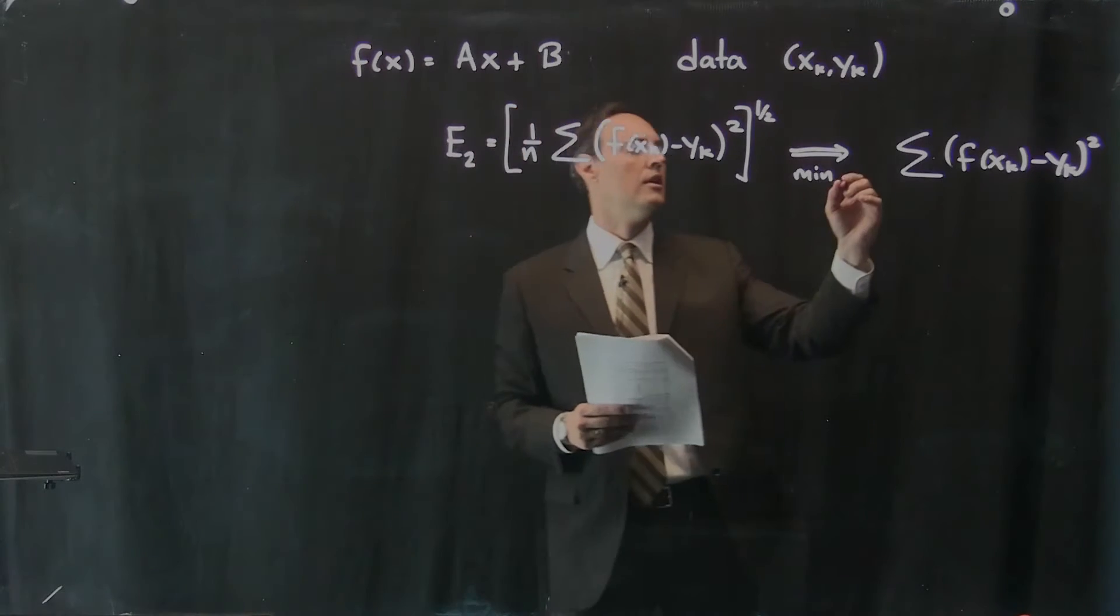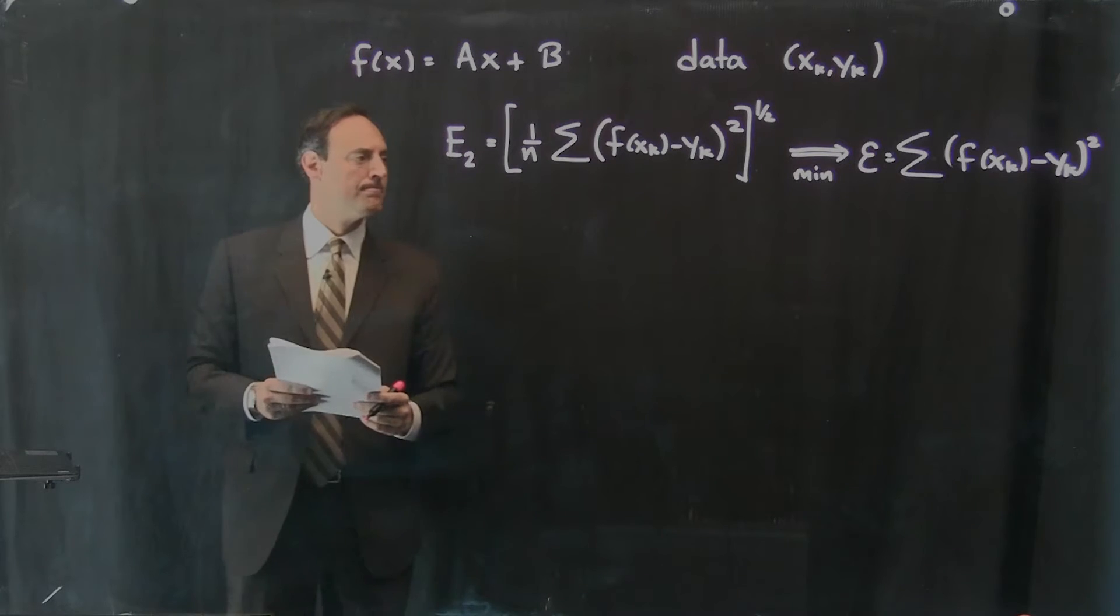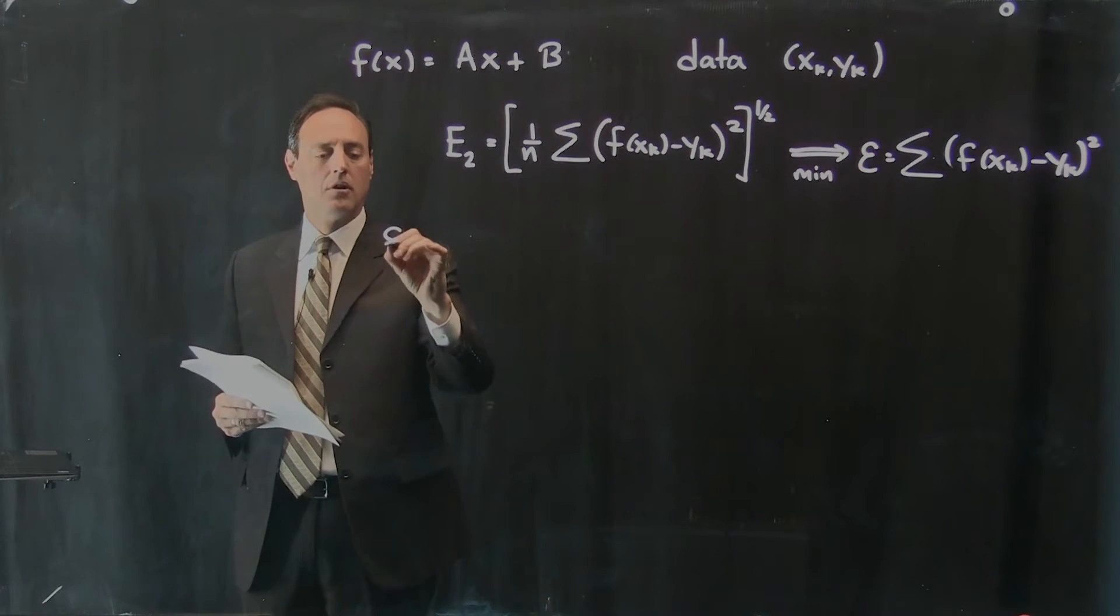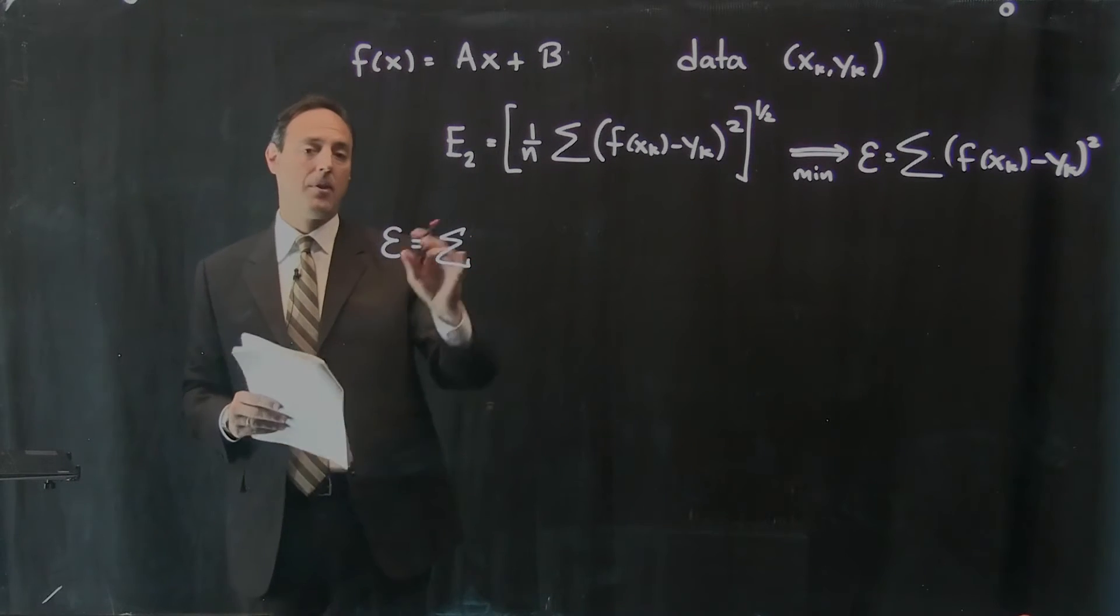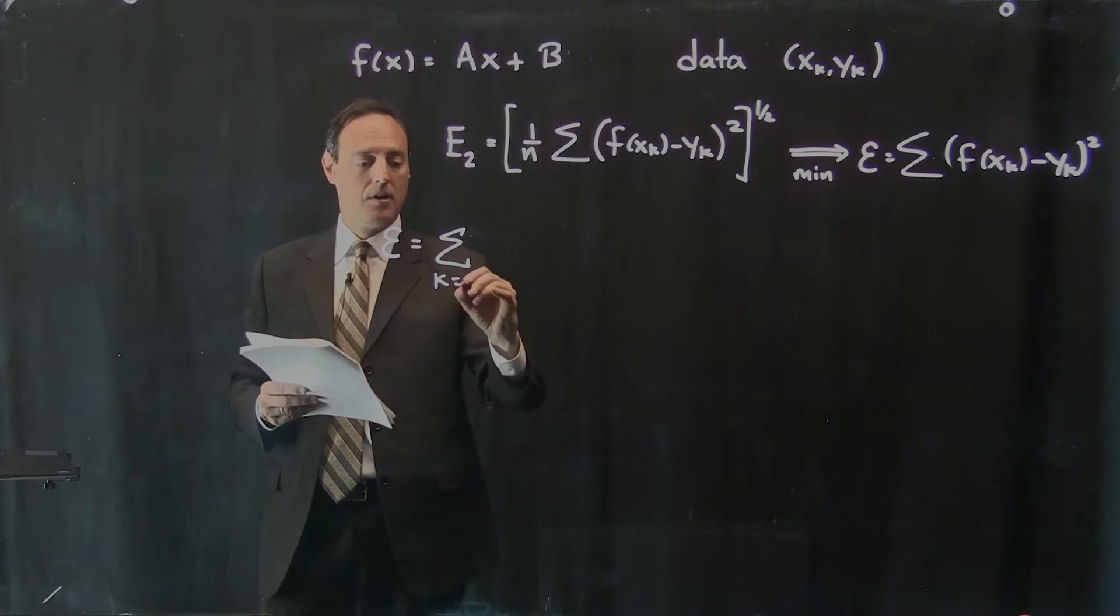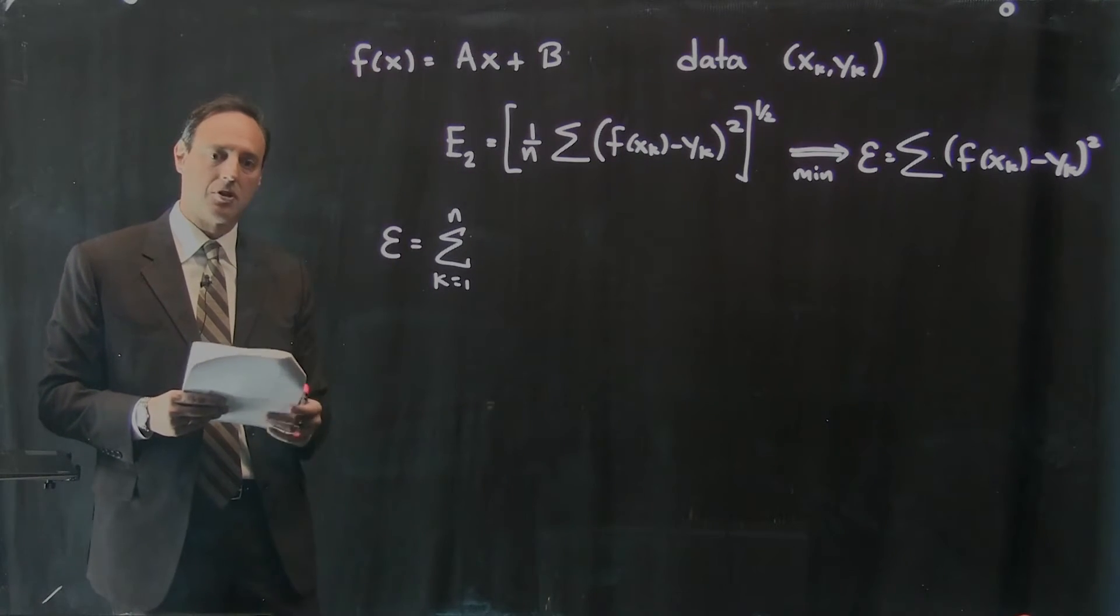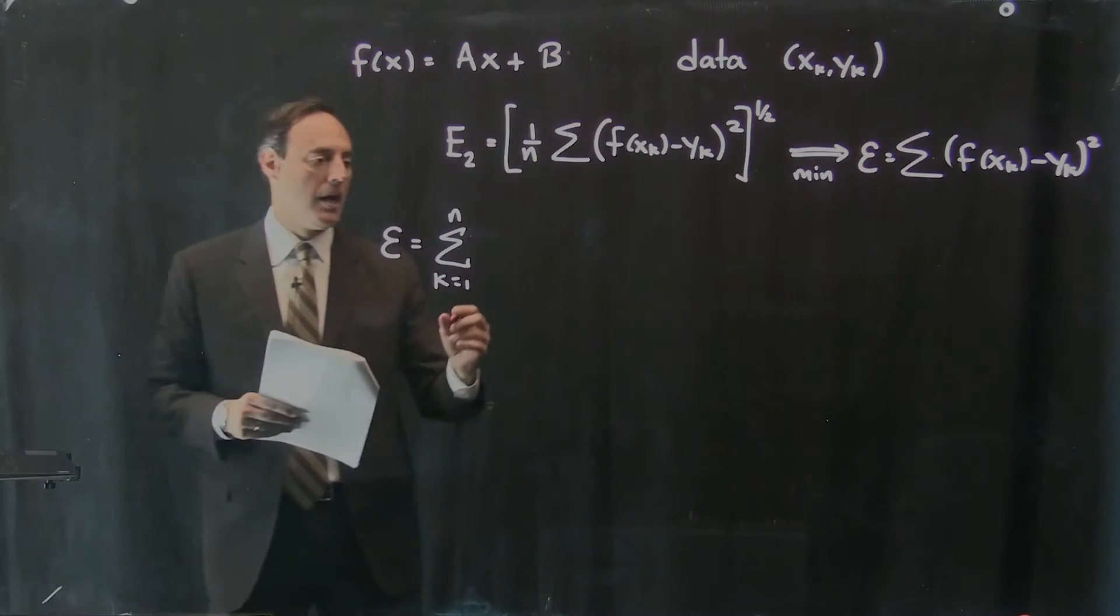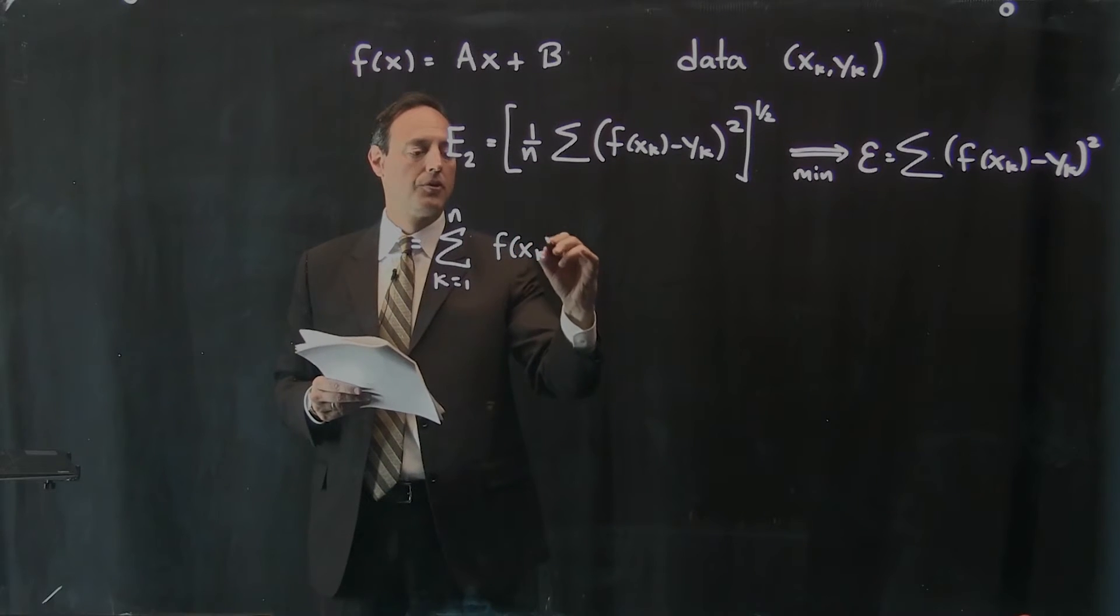So I want to think about minimizing that quantity there. Let's call this quantity script E. So script E itself, we can now start thinking about this. I have this sum, and by the way, all the sums are going to go from 1 to n for this lecture.